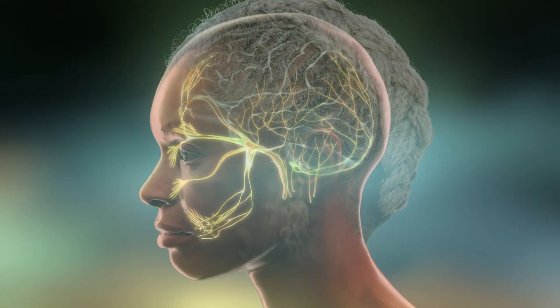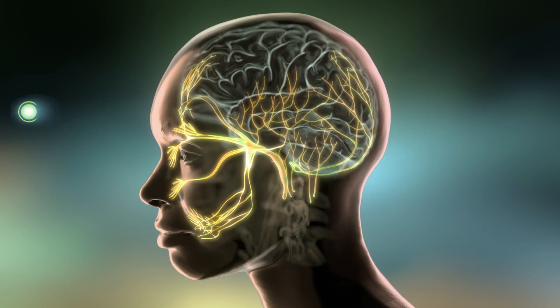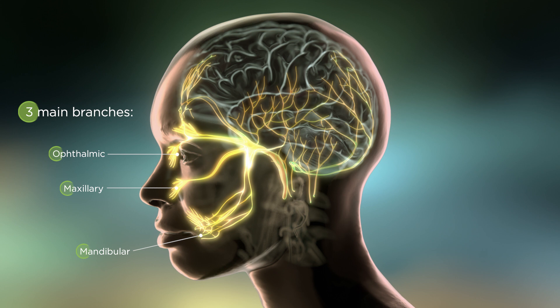The trigeminal nerve is the largest of the cranial nerves which, through three main branches, supplies sensory input to the head and face. In trigeminal neuralgia, the trigeminal nerve can become hyperexcitable, resulting in intermittent episodes of intense pain.